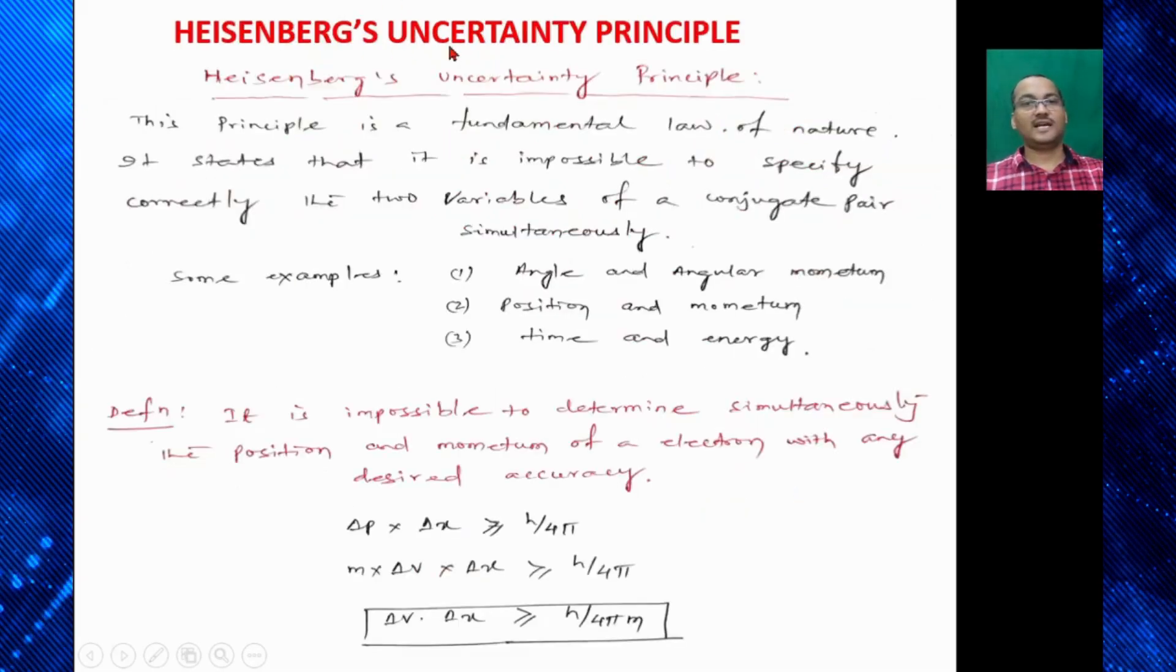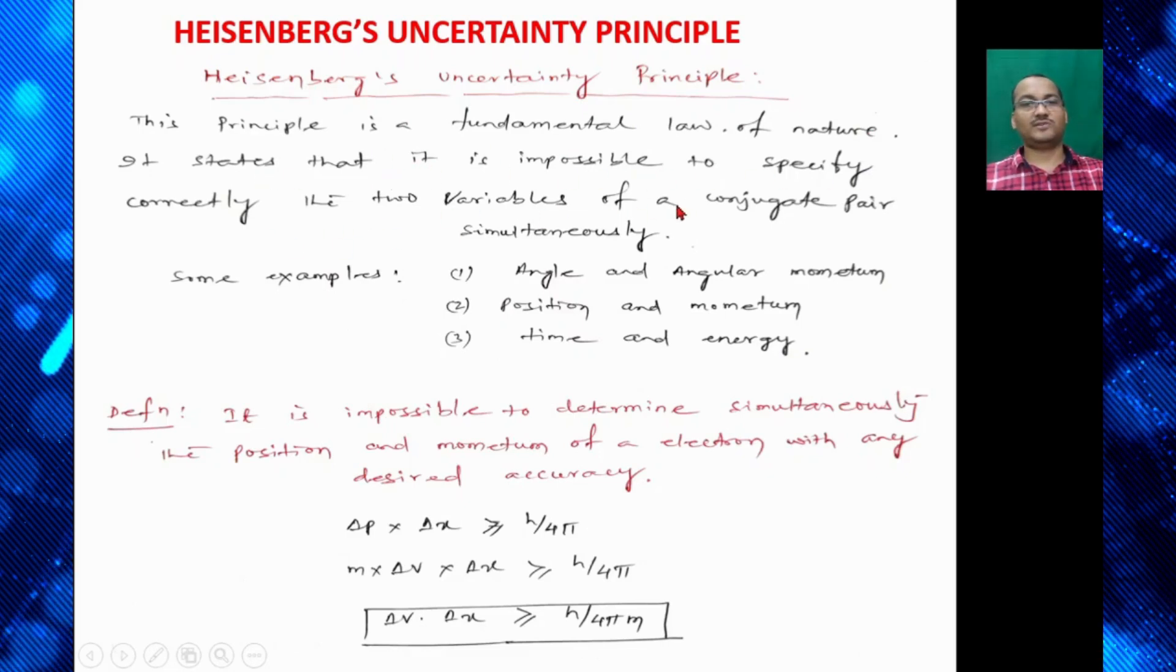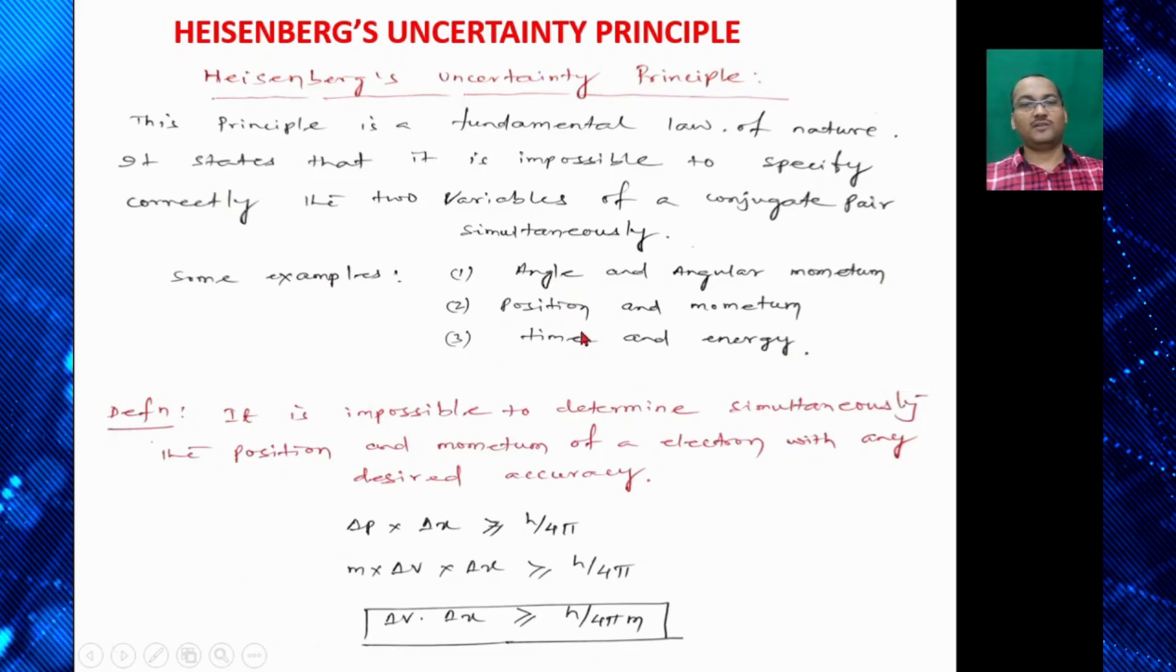The next is Heisenberg's uncertainty principle. So the principle says that it is a fundamental law of nature. It states that it is impossible to specify correctly two variables of a conjugate pair simultaneously. For example, angle and angular momentum, position and momentum, time and energy.